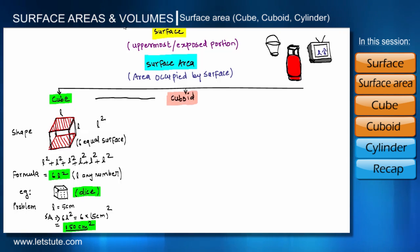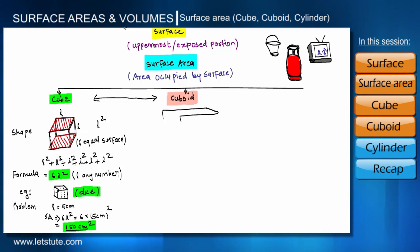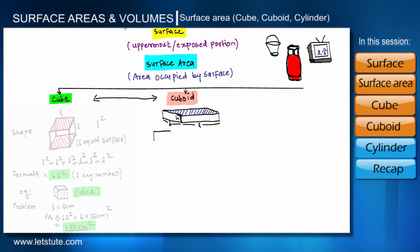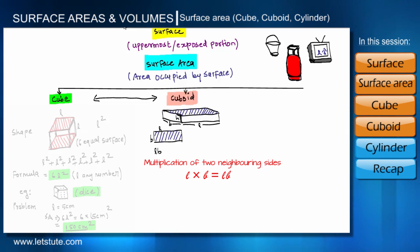Our second shape for this session is a cuboid. The difference between a cube and a cuboid: in a cube all six surfaces are square-shaped, while in a cuboid all surfaces are rectangular and only opposing surfaces are equal. Suppose the length of this cuboid is L, breadth is B, and height is H. The top surface is rectangular with sides L and B, so its area is L × B.